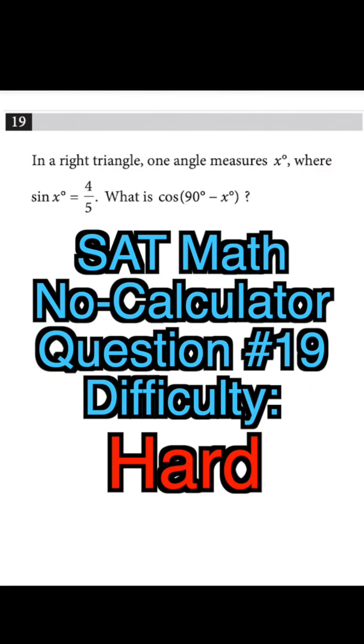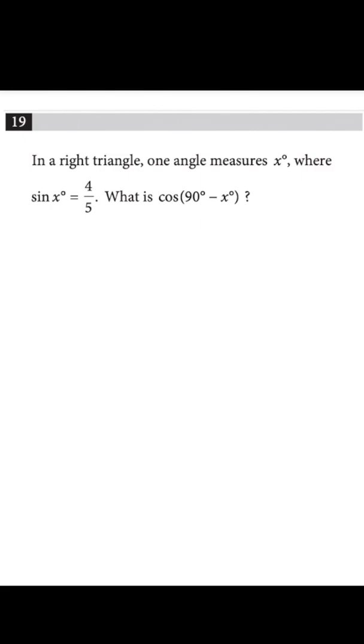SAT math, difficulty level hard. In a right triangle, one angle measures x degrees, where sine of x equals 4 over 5. What is the cosine of 90 minus x?